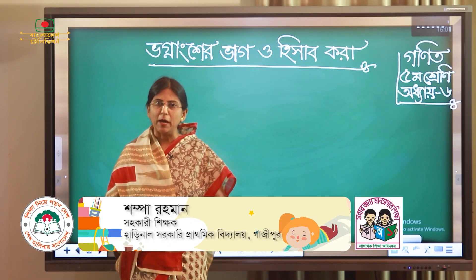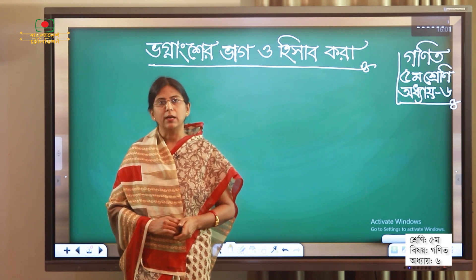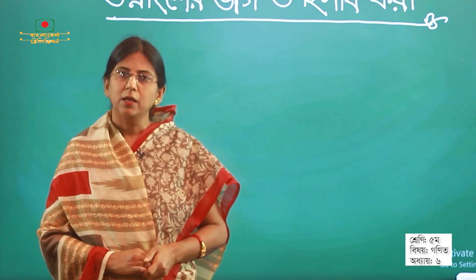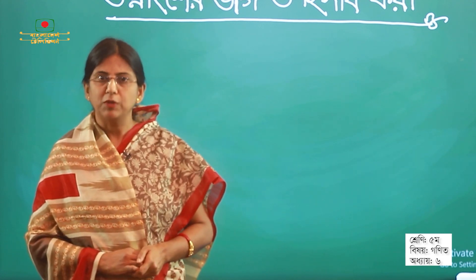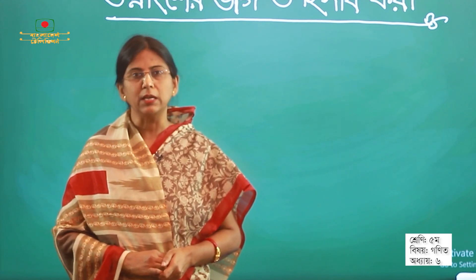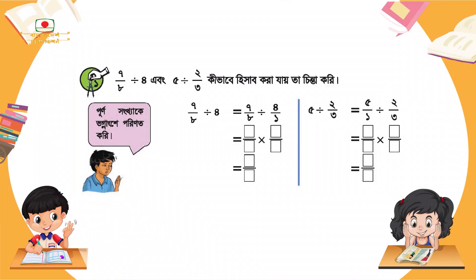প্রিয় শিক্ষার্থী বন্ধুরা, কেমন আছো? তোমরা নিশ্চয়ই ভালো আছো। তাই না? আজকে আমরা পঞ্চম শ্রেণির শিক্ষার্থী বন্ধুরা, তোমাদের নিশ্চয়ই মনে আছে গত পাঠে আমরা কী করেছিলাম? ভাগ করেছিলাম। তাইনা? কে পূর্ণ সংখ্যা দিয়ে ভাগ করেছি। ভাগনাংশকে ভাগনাংশ দিয়ে ভাগ করেছি। তাইনা? আজকে কিন্তু আমরা তাহলে একটি ভাগনাংশকে ভাগ করা হয়েছে একটি পূর্ণ সংখ্যা দিয়ে।